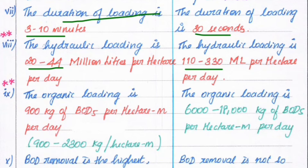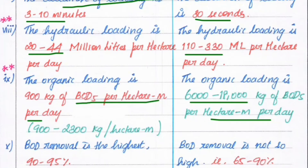The organic loading in the slow rate trickling filter is 900 kg of BOD5 per hectare meter per day, while in the fast rate trickling filter the organic loading is 6000 to 18000 kg of BOD5 per hectare per day. BOD removal in slow rate is highest at 90 to 95 percent, but in high rate trickling filter it is 65 to 90 percent.